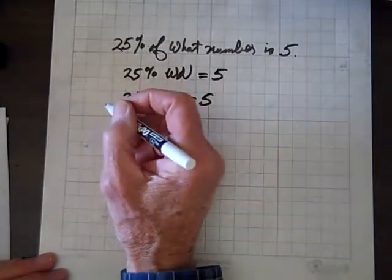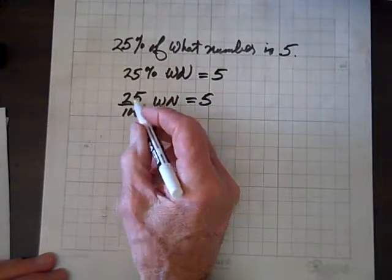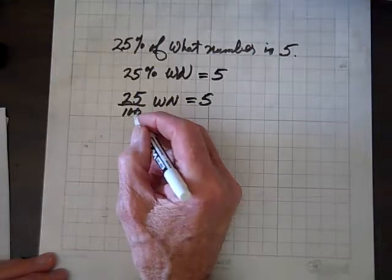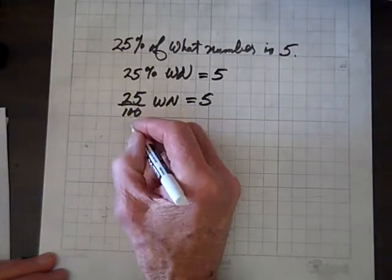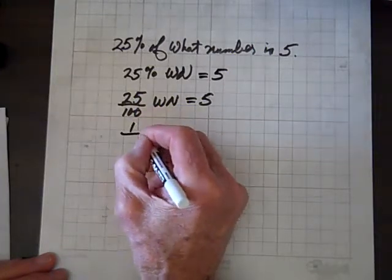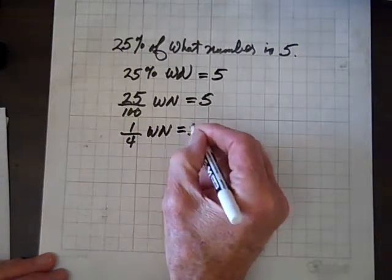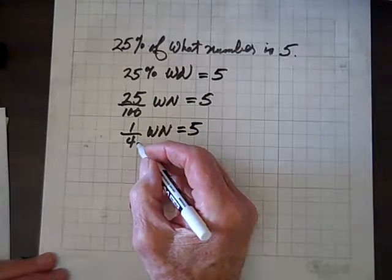Now we'll multiply both sides by the reciprocal of this. As a matter of fact, doesn't that reduce? Isn't that 25 goes into 100 four times? So that's 1 fourth WN equals 5. Oh, much easier to deal with.